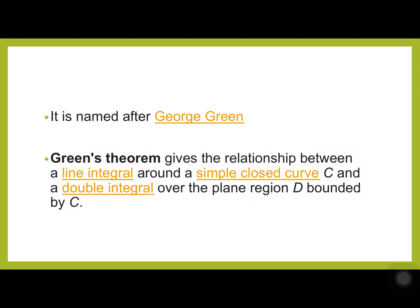Green's theorem is named after George Green, a mathematician and physicist. Green's theorem describes the relationship between a line integral around a simple closed curve C and a double integral over the plane region D bounded by C. The basic idea connects a line integral and a surface integral.